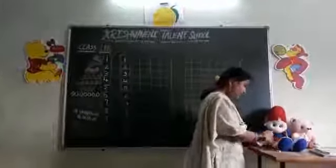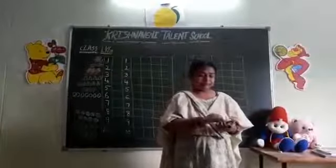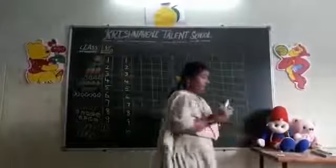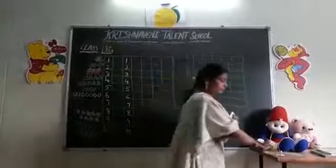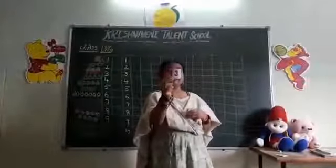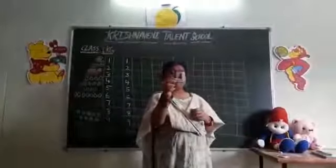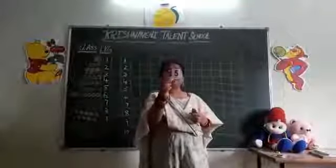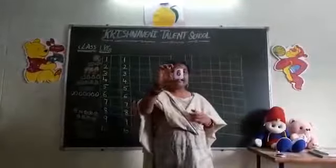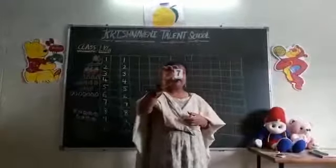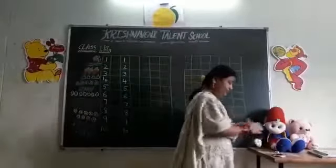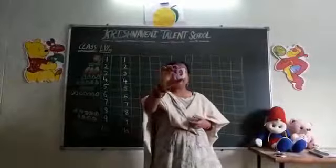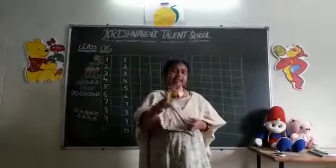So once again you will see all the numbers. 1 — which number is this? 1. 2 — which number is this? 2. 3 — which number is this? 3. 4 — this number is? 4. 5 — which number is this? 5. 6. 7. 8. 9 — which number is this? 9. And the last number is 10.